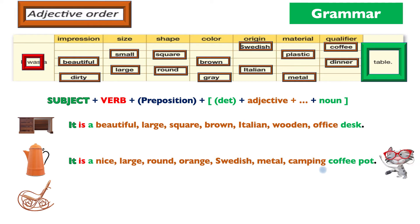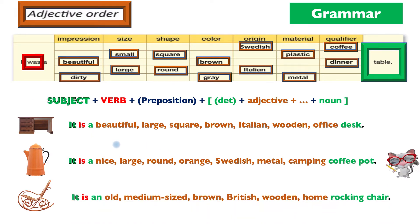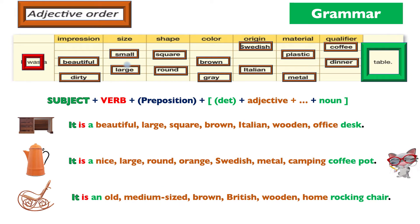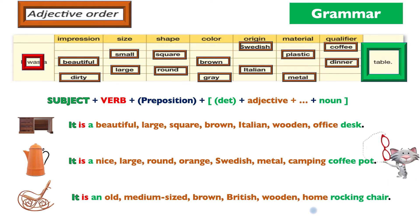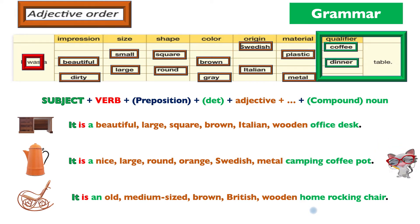The next one is a coffee pot: it is a nice large round orange Swedish metal camping coffee pot. Then we look at the attributive next. It is an old medium-sized — note that if you don't want a small or large Coca-Cola at McDonald's you ask for a medium-sized one — then color brown, origin British, material wooden, qualifier home: rocking chair.